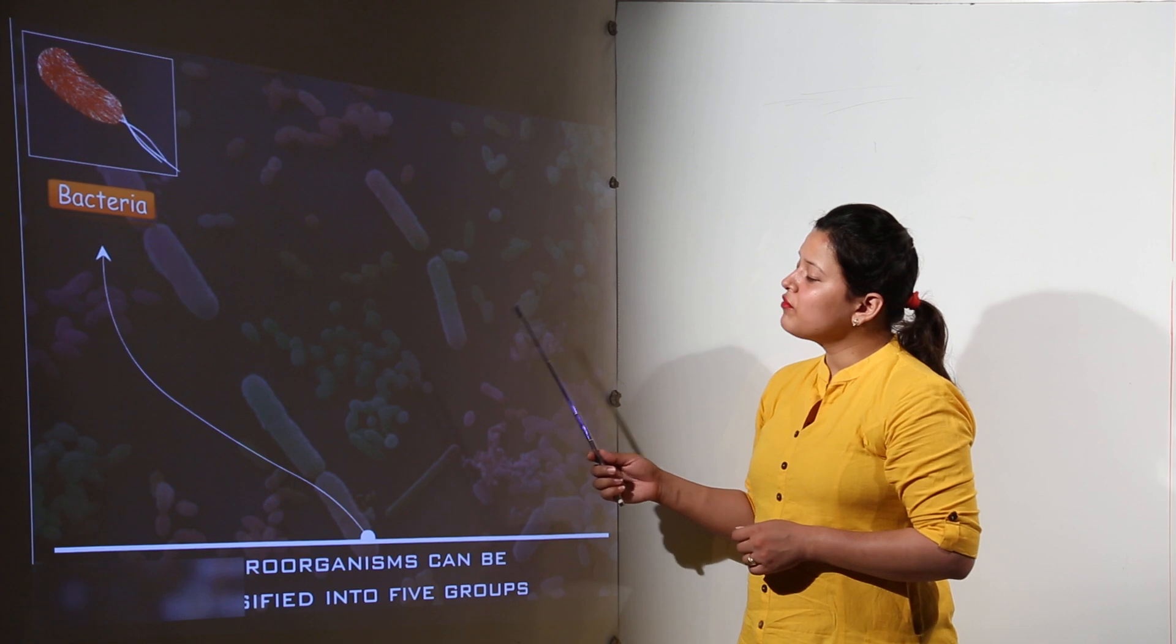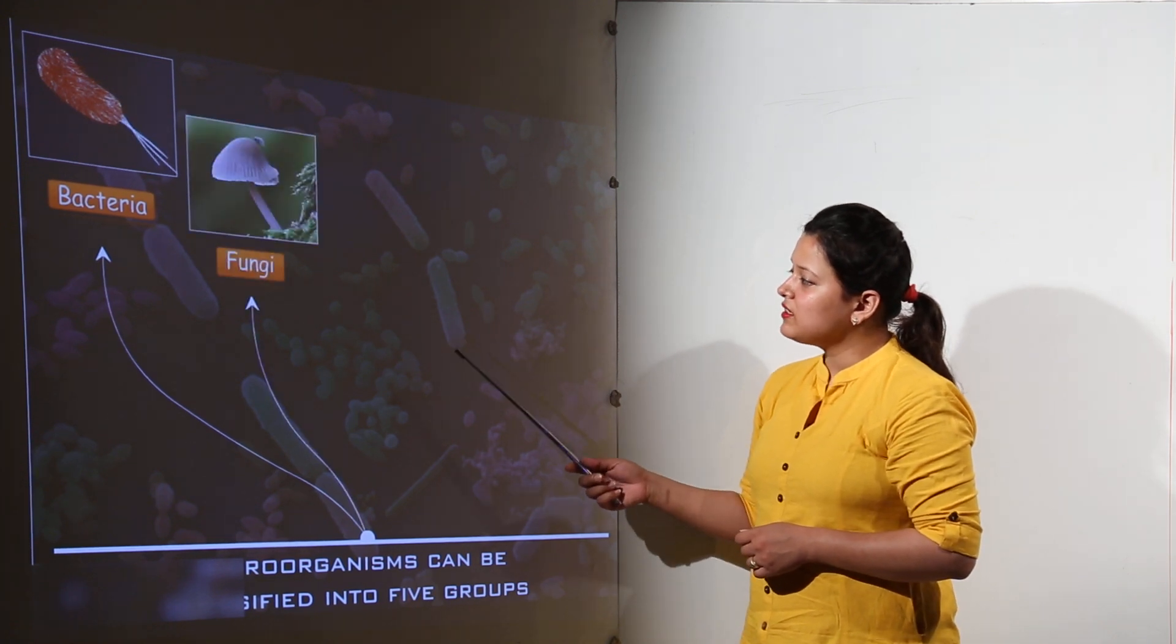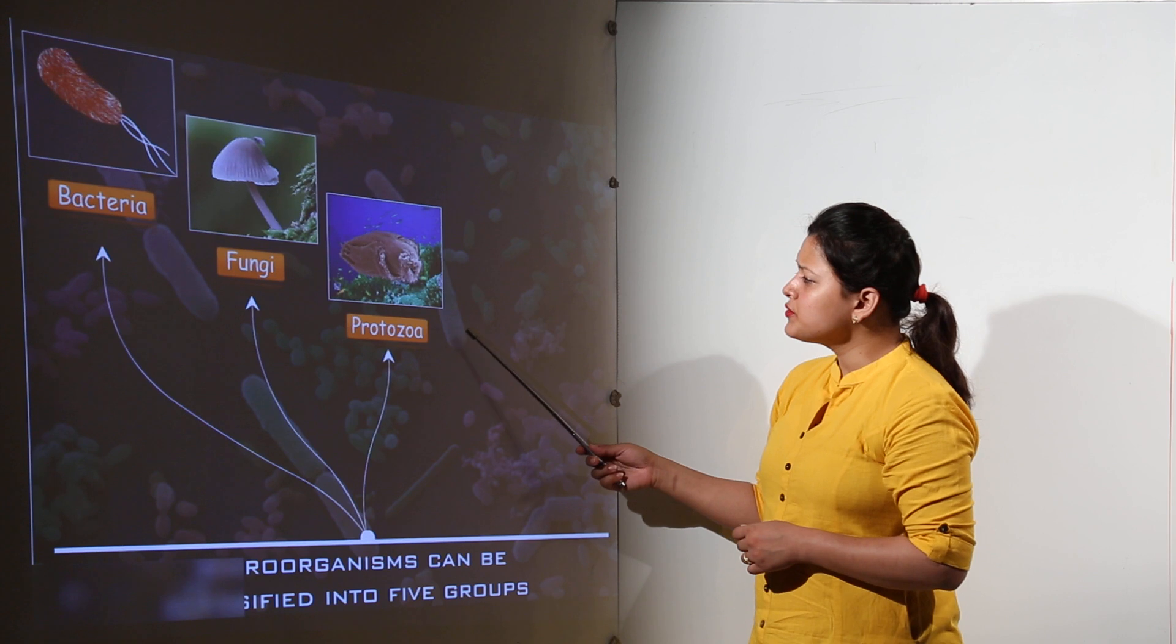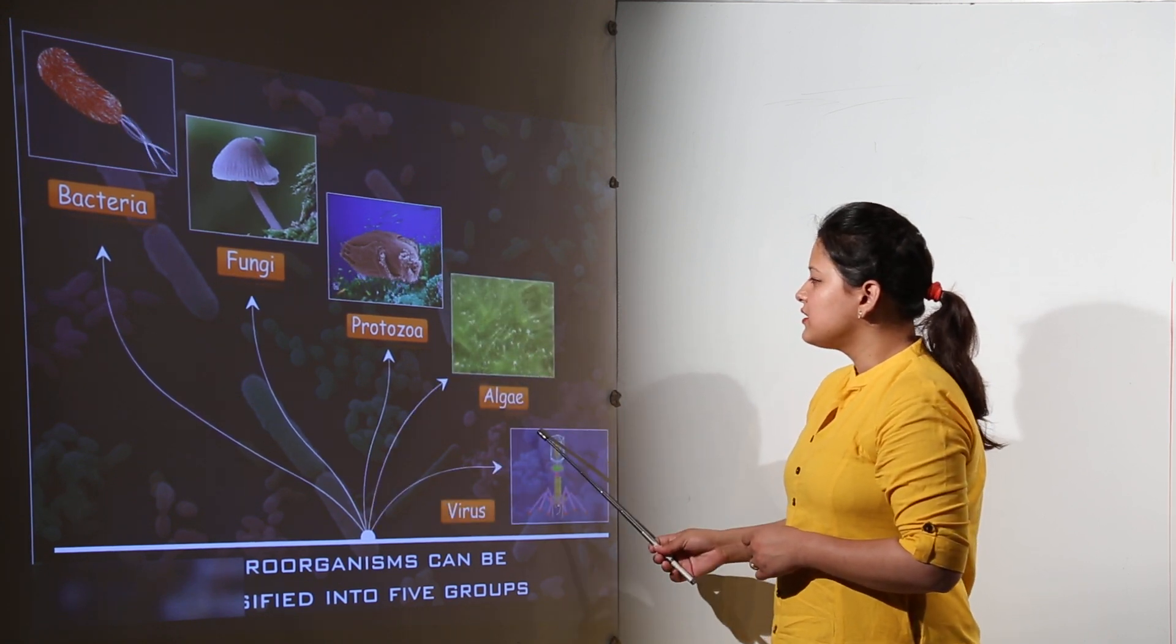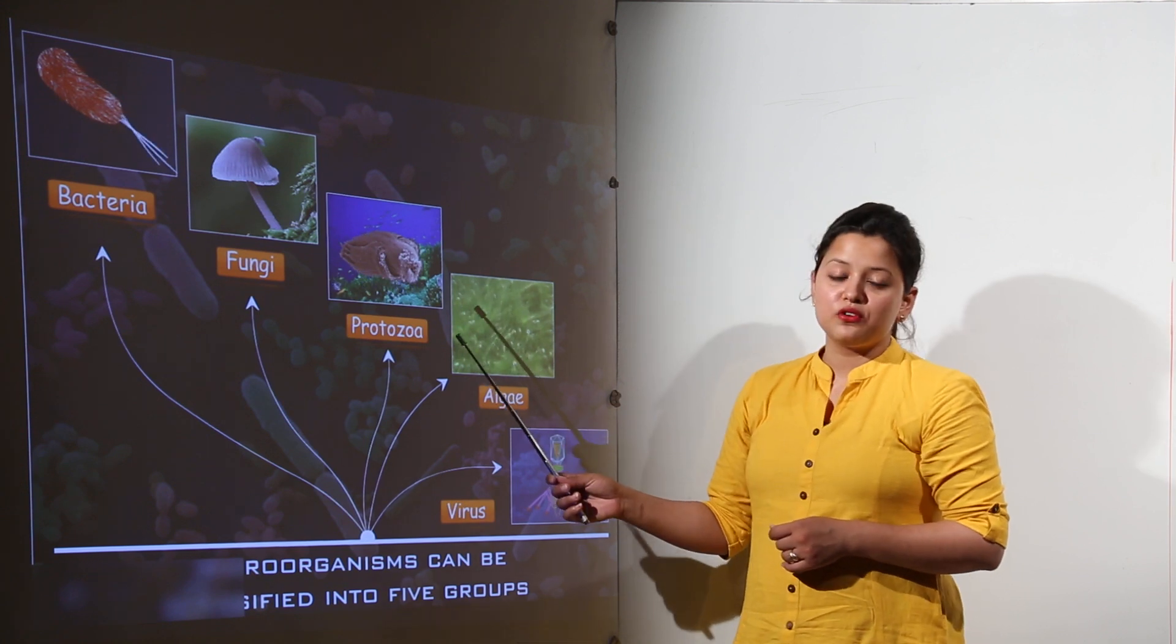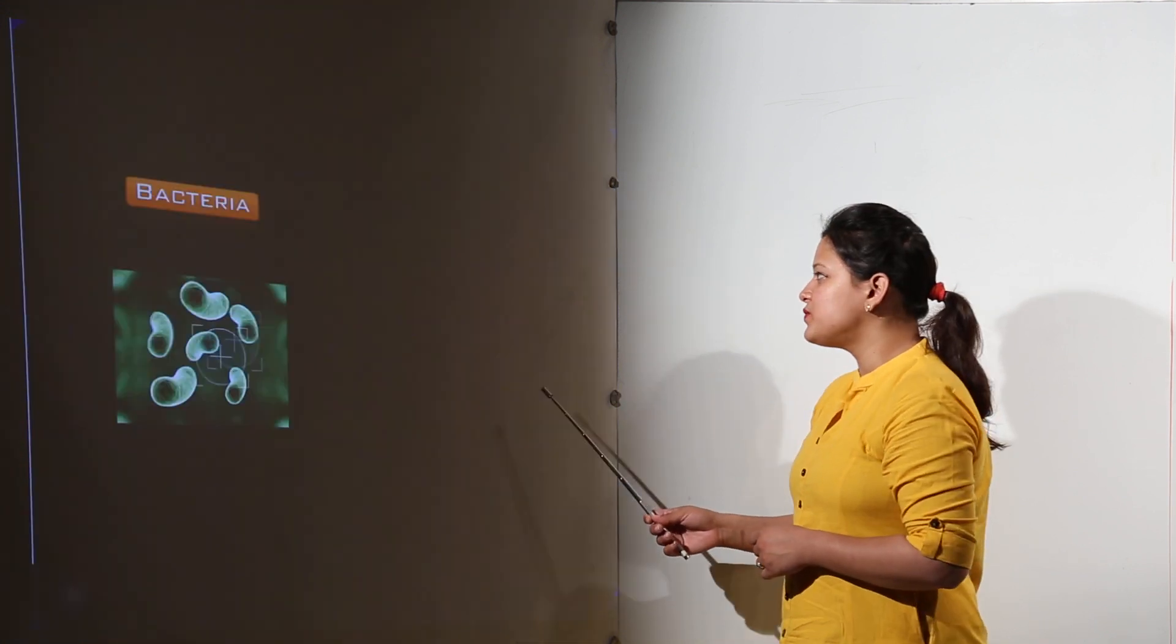Microorganisms can be of five types: that is bacteria, fungi, protozoa, algae and virus. So these are the five types of microorganisms or microbes as we say.